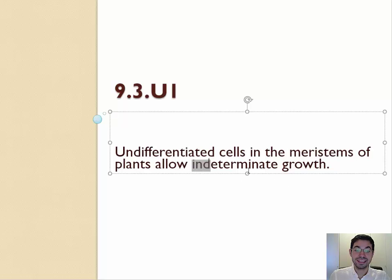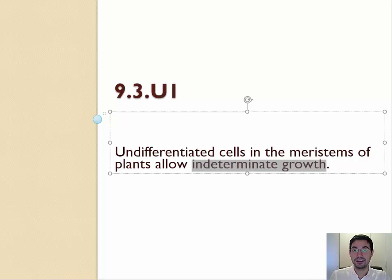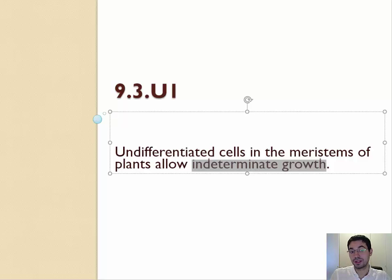This allows indeterminate growth. Indeterminate means unending. Plants can keep growing through their whole lives, and that continued growth is indeterminate — it's not predetermined, it can continue.